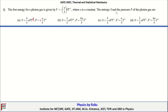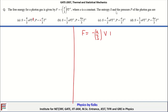Let's look at the next problem. It is related to the free energy of a photon gas inside a cavity. The free energy is given by the expression F equals minus (A/3) times V times T to the power 4.